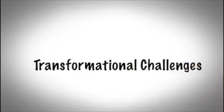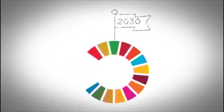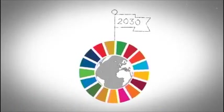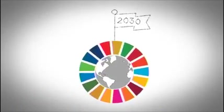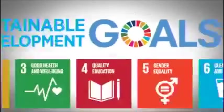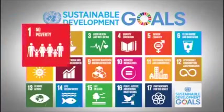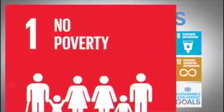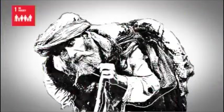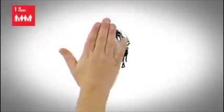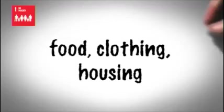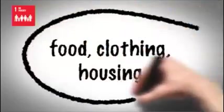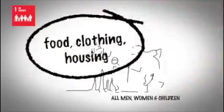Sustainable Development Goals, or SDGs, are a collection of mutually interconnected 17 global goals. Goal 1: End poverty in all its forms everywhere. We are committed to eradicating extreme poverty for all in all dimensions.